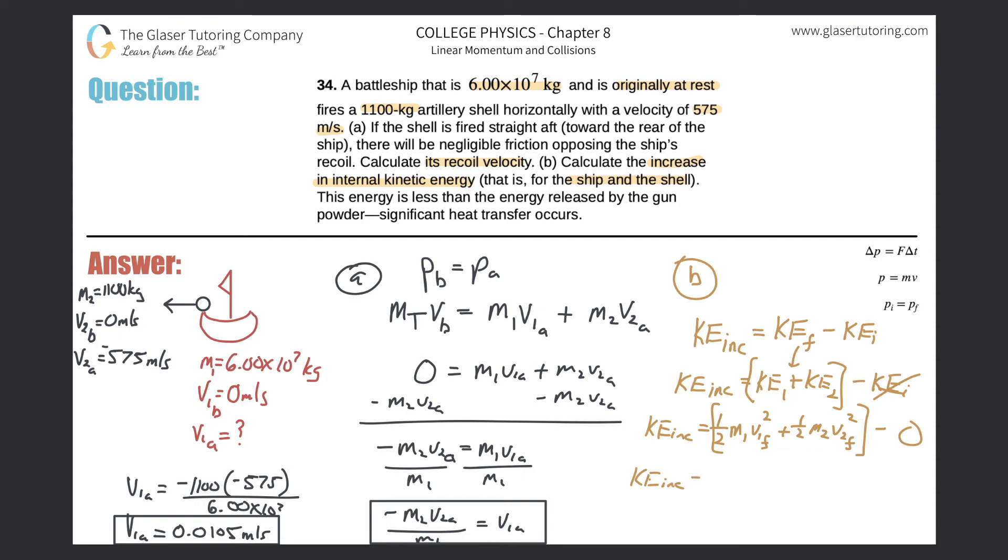So now I'm just going to plug everything in. Kinetic energy increase should equal one-half times the mass of the ship, which was 6 times 10 to the 7th, and then multiplied by its velocity squared, which is 0.0105 squared. Plus, I'm going to write it at the bottom here, plus one-half times the mass of the artillery shell, which was 1,100 kilograms, multiplied by its velocity of negative 575 meters per second, and that's squared.